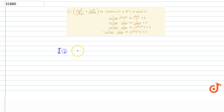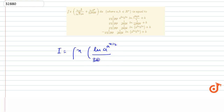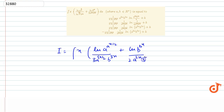In this question we have to find the integration of x times log of a^(x/2) divided by 3·a^(5x/2)·b^(3x), plus log of b^(bx) divided by 2ab^(4x), dx. We have to start the integration of this.